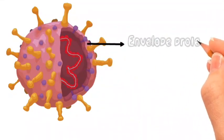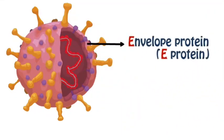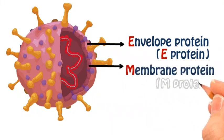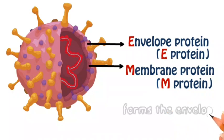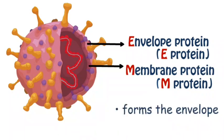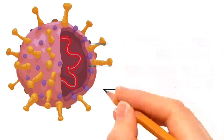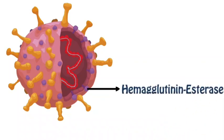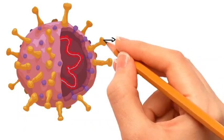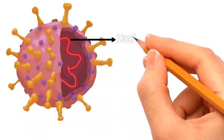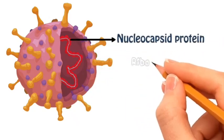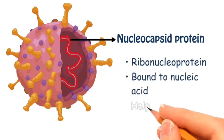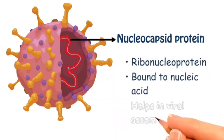The envelope protein, or E protein, and the membrane protein, or M protein, form the envelope. Hemagglutinin esterase is also present at the surface of the virus. The nucleocapsid protein is a ribonucleoprotein that is bound to the nucleic acid and helps in viral assembly.